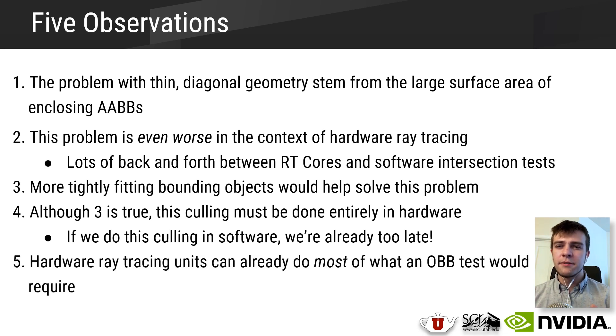And then finally, arguably the most important observation relevant to our work is that the ray tracing hardware units on Turing can already do most of what a hardware object-oriented bounding box test would require. Each time a ray traverses an instance, it's transformed using that instance's affine transform and then it traverses that child BVH only if the transformed ray hits that child BVH's root node. We can reduce this problem of a hardware-accelerated oriented bounding box test to a combination of an instance transform and a suitably designed intersection program.